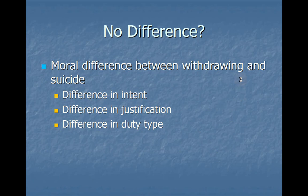I would argue that there are at least three differences between withdrawing life-sustaining treatment and assisted suicide. The first is a difference in intent. The second is a difference in moral justification. And the third is a difference in the moral duty type involved. We'll go from easiest to most complex, so we'll start with intention.